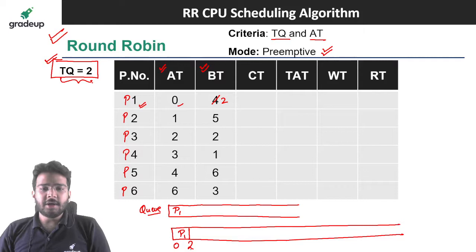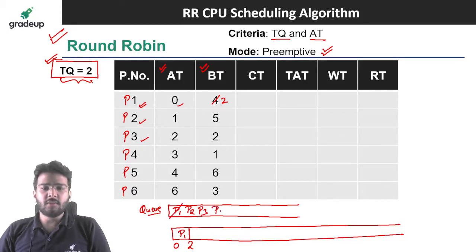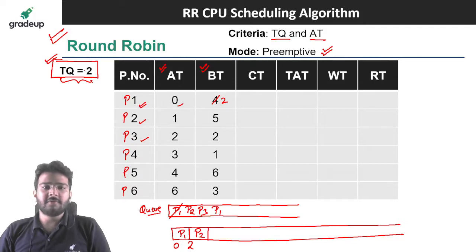At 2 units of time, P2 and P3 have also arrived in the ready queue, so we enqueue P2 and P3. P1 has executed for 2 units, so we dequeue it and re-enqueue it. Now it's time to schedule P2. The burst time is 5 and time quantum is 2, so we schedule P2 for 2 units — from time 2 to 4.